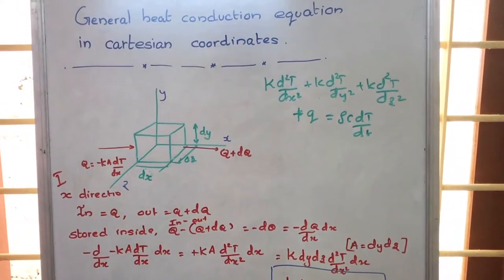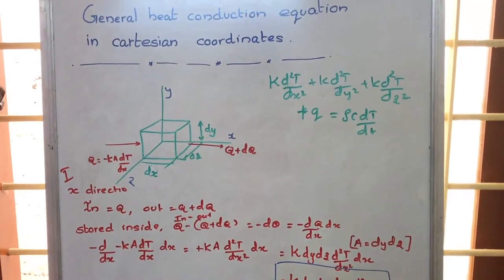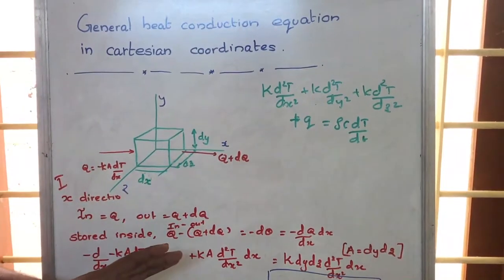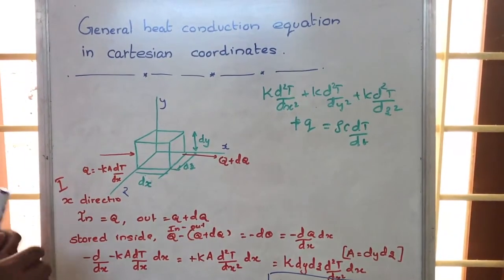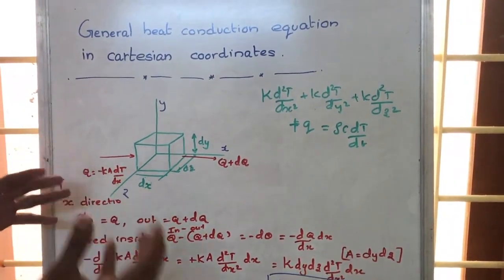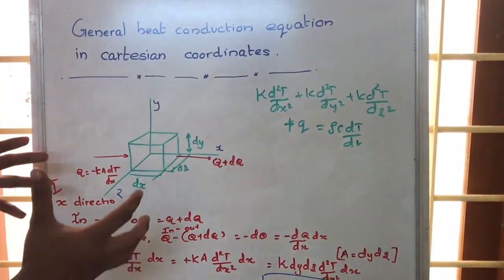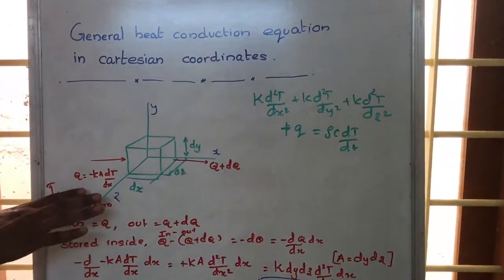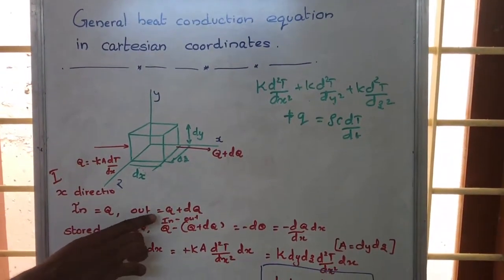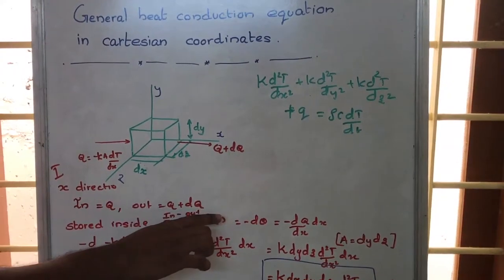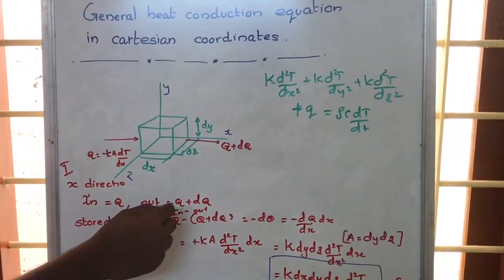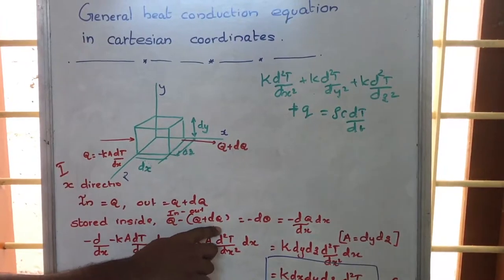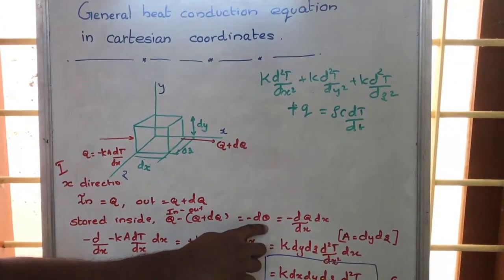Energy is entering and a part of energy is going out. Energy in minus energy out will be the energy stored inside this element. In the x-direction, energy in is q and energy out is q plus dq. So in minus out, that is q minus (q plus dq), which equals minus dq.